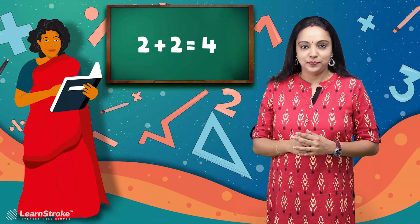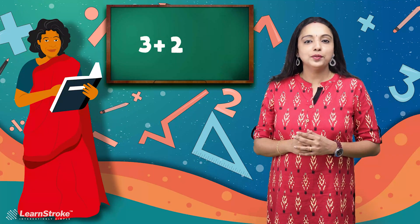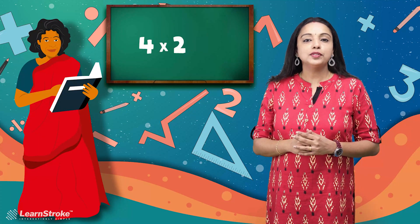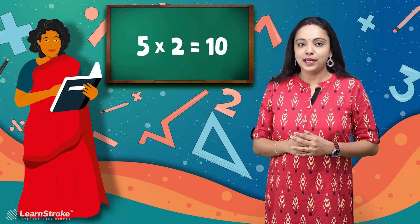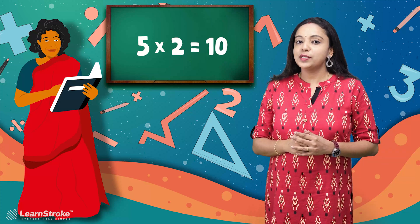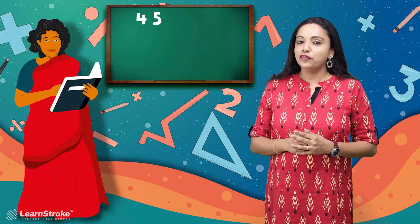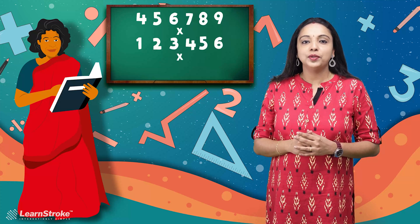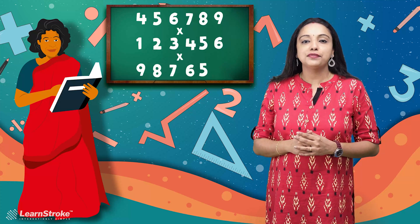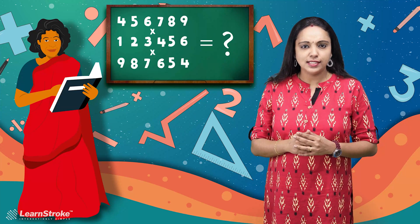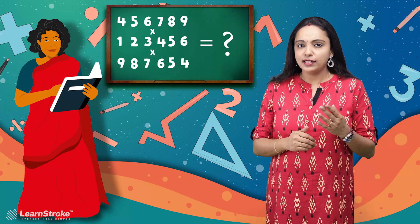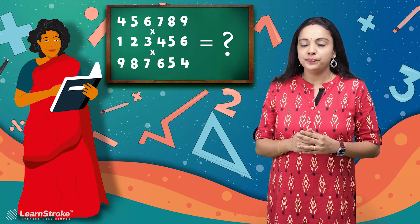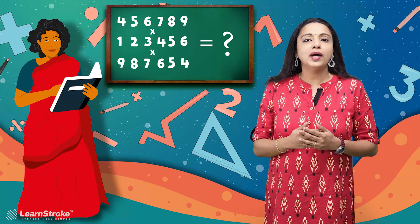Two plus two is four, three plus two is five, four twos are eight, and five twos are ten. But what about four, five, six, seven, eight, nine into one, two, three, four, five, six into nine, eight, seven, six, five, four? Do you know the answer? Have you done the calculation already in your mind? I can't.